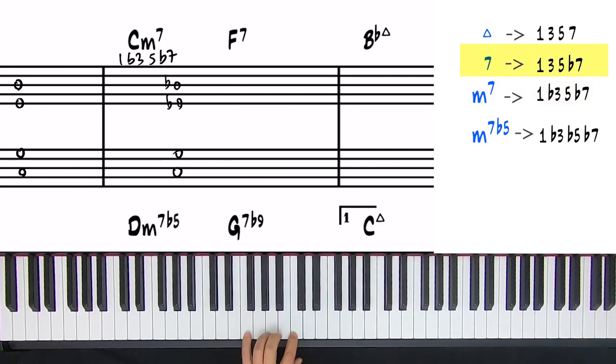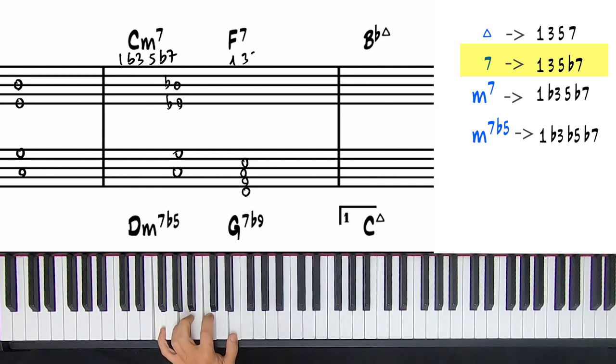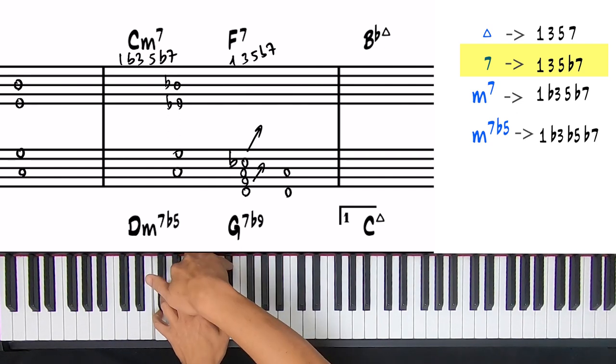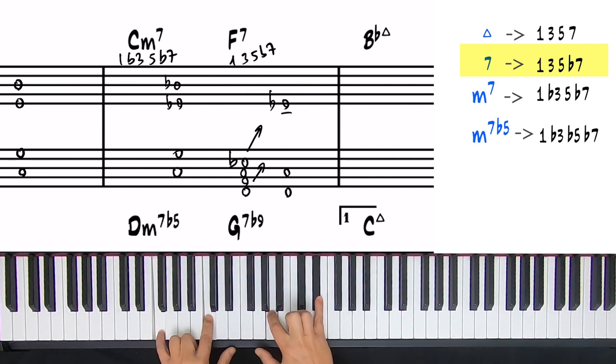F7. Let's write the four notes. Now a dominant chord is a 1, 3, 5, flat 7. So is F to A a major third? Yes. F to C is a perfect 5th. That's good. And F to E is a major 7, but we need a flat 7 or a minor 7. So we need to flatten the E to E flat and we have our F7 in root position closed voicing. We move an octave up and we have our drop 2 and 4 voicing.